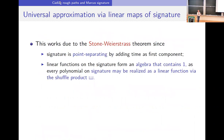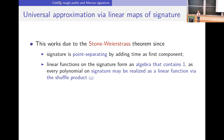The reason we have universal approximation — that linear maps of the signature work — is a consequence of the Stone-Weierstrass theorem, because the signature is point-separating if you add a strictly monotone component such as time; otherwise you only have tree-like equivalences, as proved by Terry Lyons and Ben Hambly. Linear functions on the signature form an algebra, because every polynomial on the signature can be realized as a linear function via the so-called shuffle product.